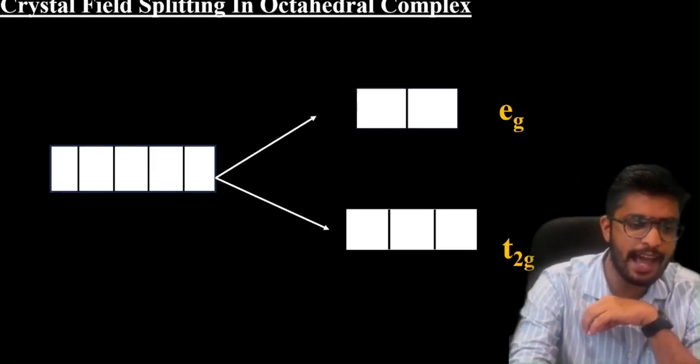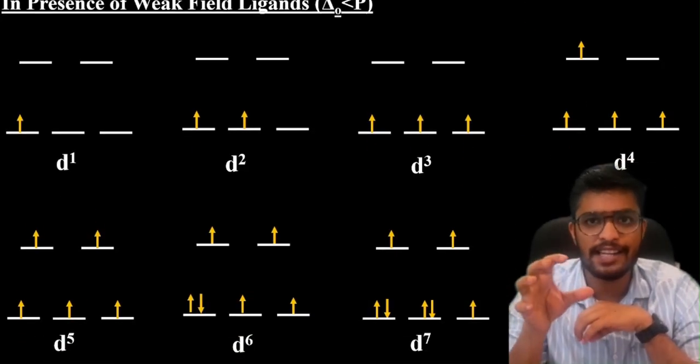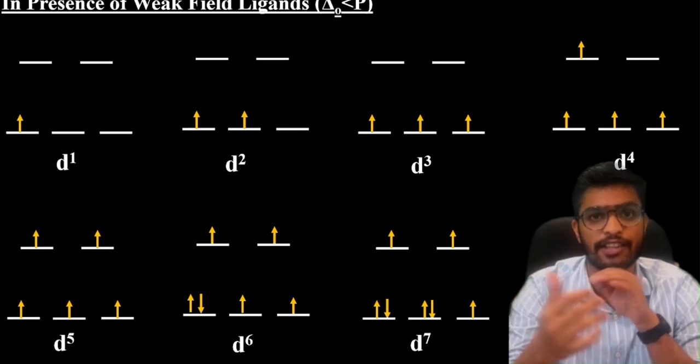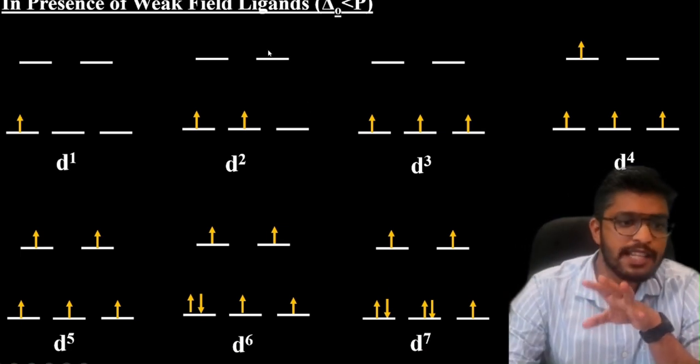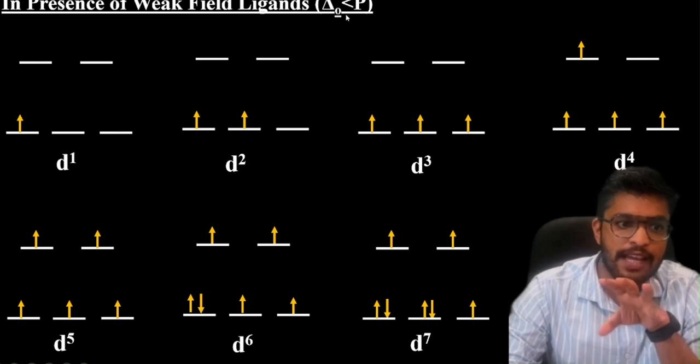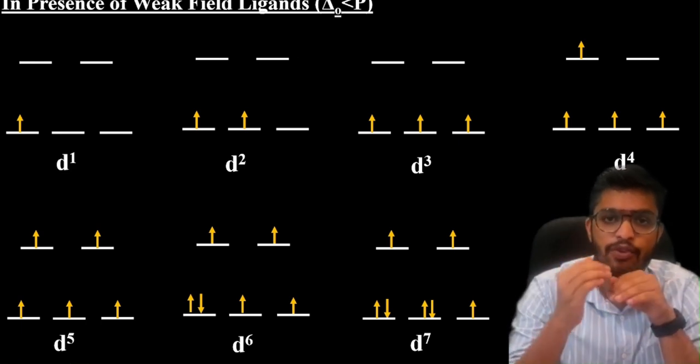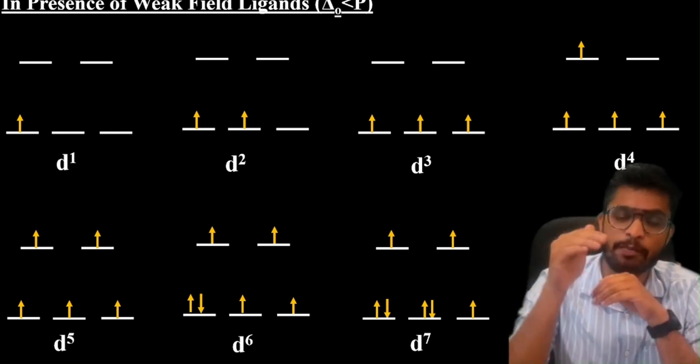For weak field ligands, CFSE energy will be less than pairing energy, so the electrons will not pair up. Instead, the electrons will go to each orbital.